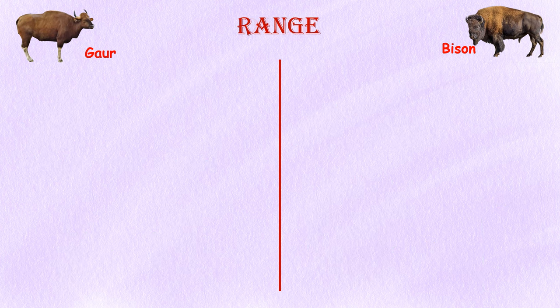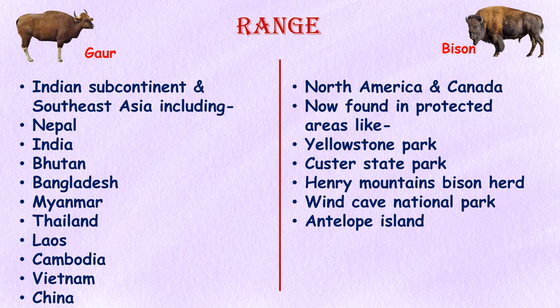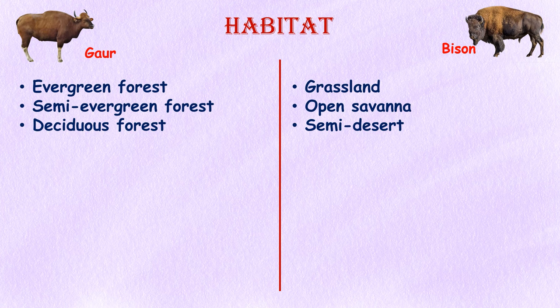Range: The Indian gaur is native to the Indian subcontinent and Southeast Asia, including Nepal, India, Bhutan, Bangladesh, Myanmar, Thailand, Laos, Cambodia, Vietnam, and China. The American bison is native to North America and Canada. Historically they roamed vast areas of the continent, but their current habitat is primarily limited to protected areas such as Yellowstone Park, Custer State Park in South Dakota, the Henry Mountains bison herd in south-central Utah, Wind Cave National Park in South Dakota, and Antelope Island.